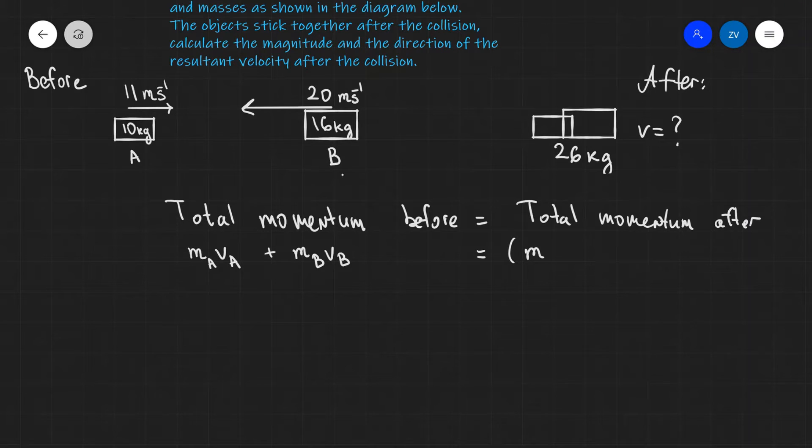Remember, straight after the collision, those two objects are now one object. So this will be equal to the mass of one of the objects plus the mass of the other object times some final or resultant velocity after the collision. I'm going to call that v. Suddenly we have an equation where we know ma, va, mb, and vb, so we only have really one unknown in this equation we can solve for.